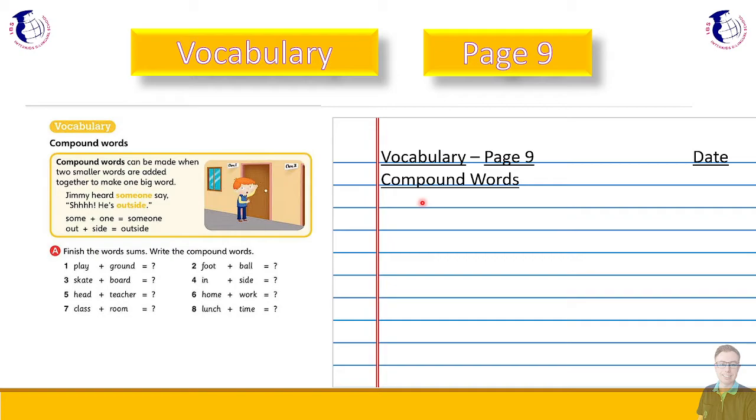Okay. Turn your books to page number nine for the vocabulary section. And we're still dealing with compound words, which you should know many of after that video. So compound words can be made when two smaller words are added together to make one big word. Okay, I've read this already, but I'll read it again. Jimmy heard someone say, shh, he's outside. So some plus one equals someone. And out plus side equals outside. So remember, make sure your titles and your dates are written in your book.